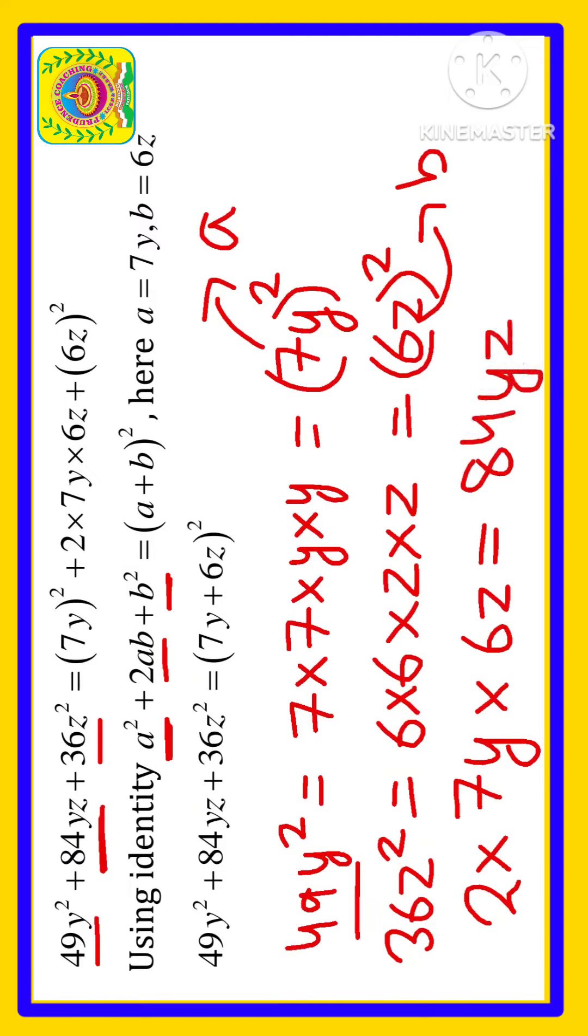This is satisfying, that means we can write this given expression as a² + 2ab + b² where a is 7y and b is 6z.